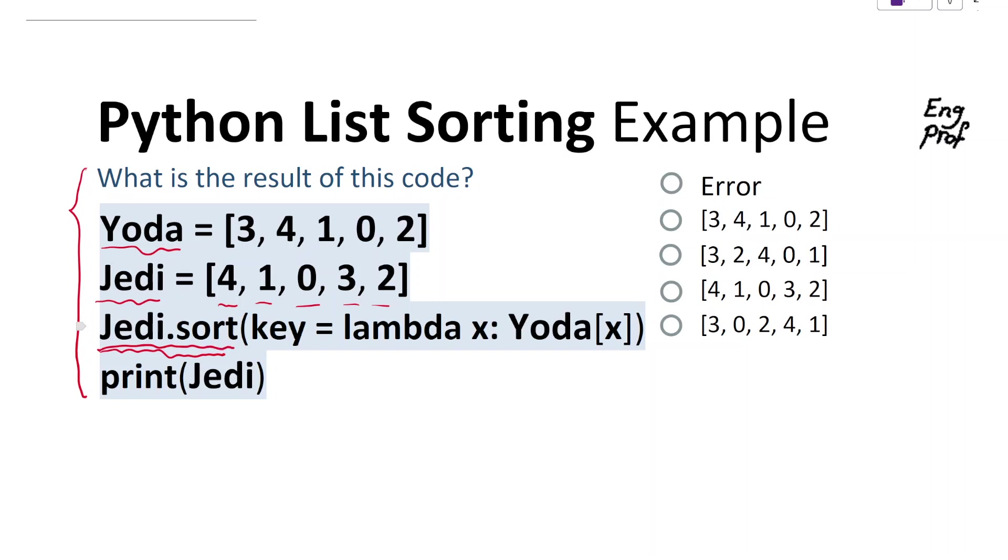When we do Jedi.sort, the first element from Jedi is 4, so x is going to be 4. The key for sorting will be Yoda[4].